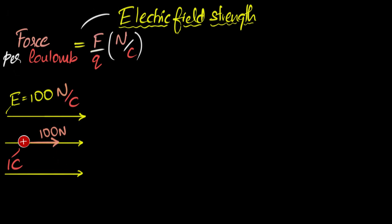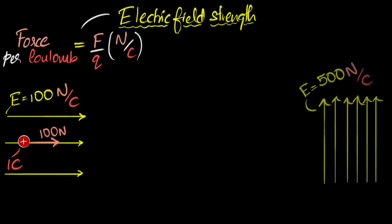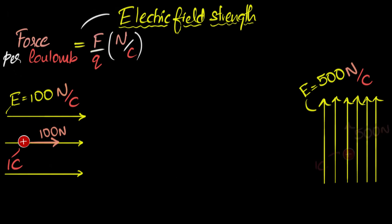Similarly, what would it mean if I had another electric field, say upwards, and let's say this electric field was 500 newtons per coulomb? Well, this would mean that if I bring that one coulomb of charge and keep it over here, then that coulomb would experience 500 newtons of force — 500 newtons per coulomb.